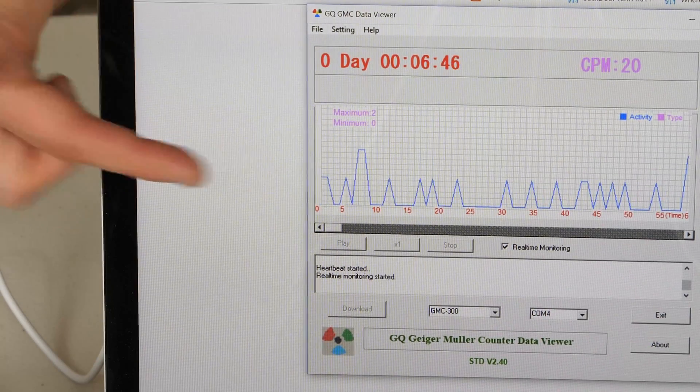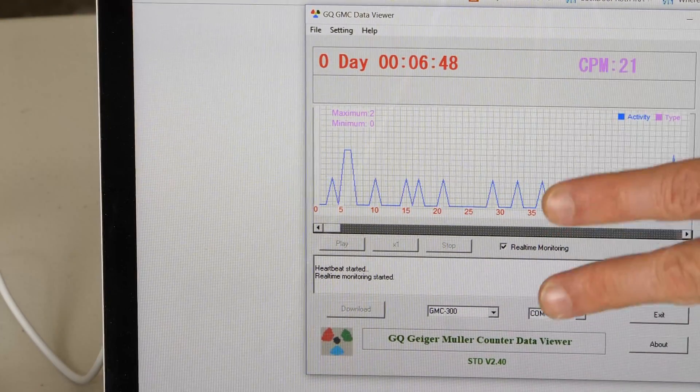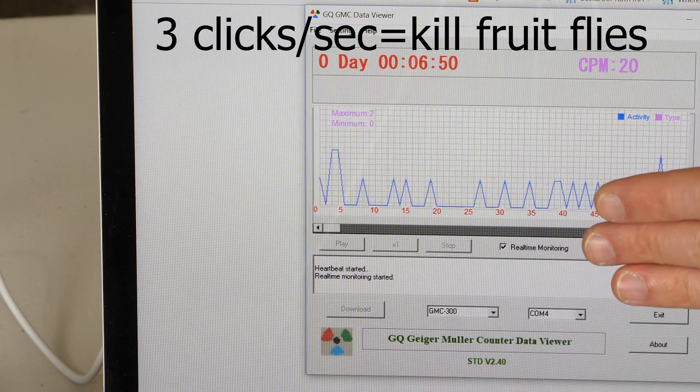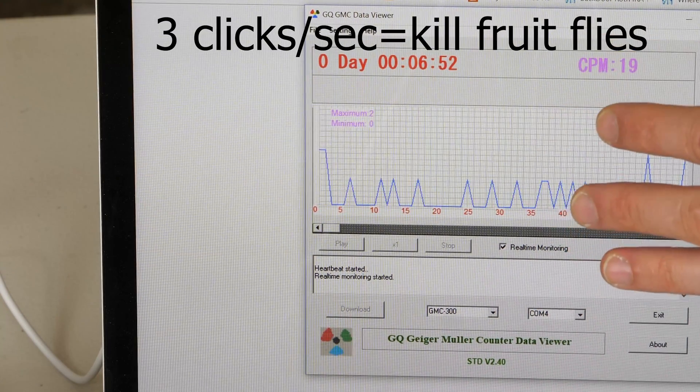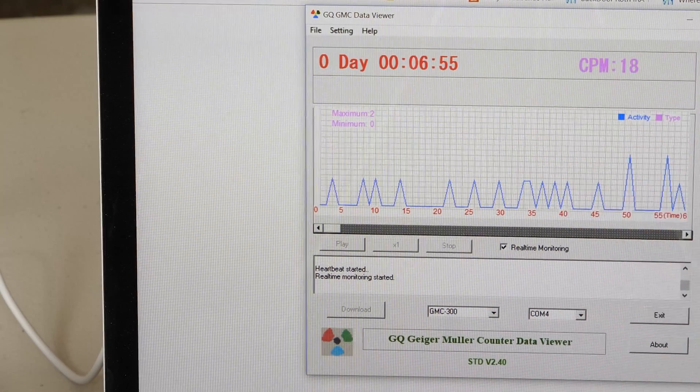And so I wrote a little program that says if there are ever three clicks within a second, then it's going to turn on a smart device. And the smart device is going to trigger my vacuum chamber.